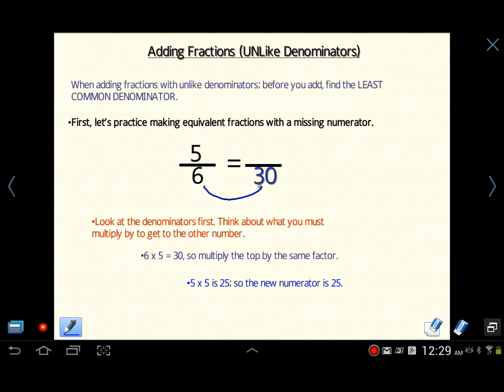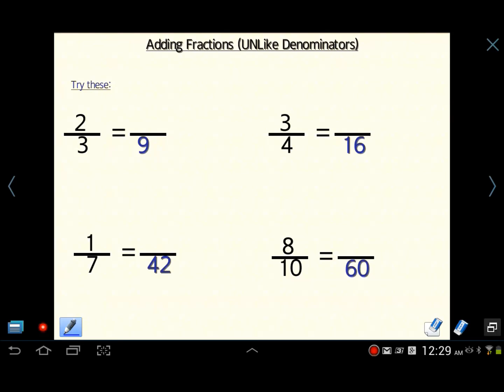If the denominator changes, then this fraction has to change. That's just how it is. So how many times does six factor into thirty? Six factors into thirty five times. So we will do the same thing with the five. Five times five is twenty-five. So this is a crucial, crucial step.